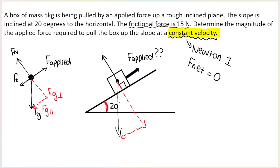If the slope is at 20 degrees, that angle appears in the component triangle. This is a 90-degree angle here, and you can work out the other angle, but you just need to know this 20-degree angle. If this angle is 20, the angle in the triangle is 20. If this angle were 45, the triangle angle would be 45 — it's always in that little corner of the triangle.